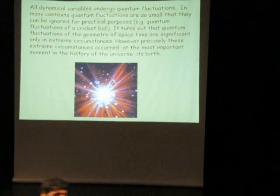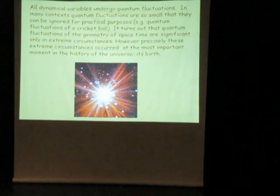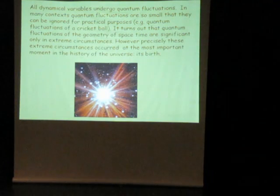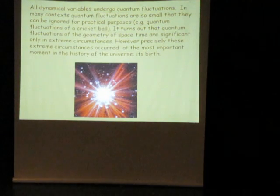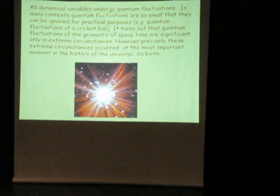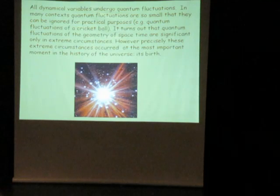You can ask how I know this — maybe there are dynamical variables we have never encountered that don't have these fluctuations. I know this because of a very powerful theorem. The theorem says that any mathematical theory which has some components dynamically fluctuating in this quantum way and other components fixed in a classical way is mathematically inconsistent. A theory that's inconsistent would give you different answers depending on how you do the calculation, but the real world always gives a unique answer.